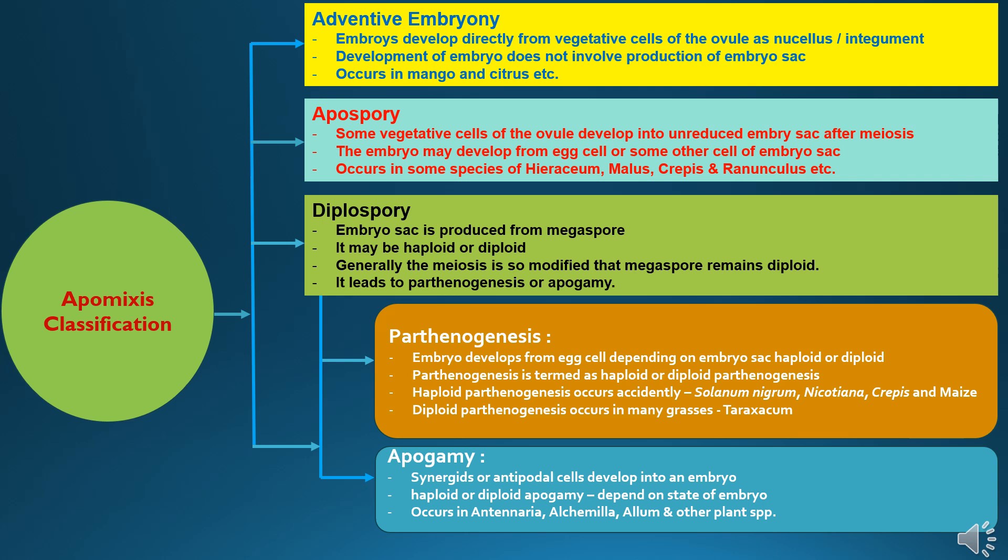Regarding apogamy, the synergids or antipodal cells develop into an embryo. It may be haploid or diploid apogamy depending upon the state of the embryo, and it occurs in some crops like Allium, Antennaria, and Achimella, etc.